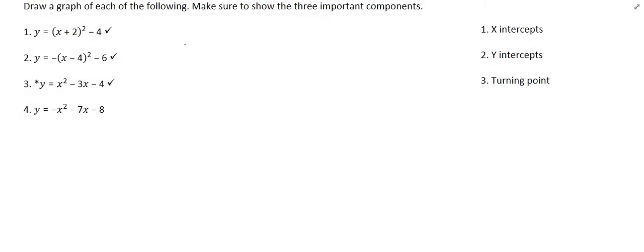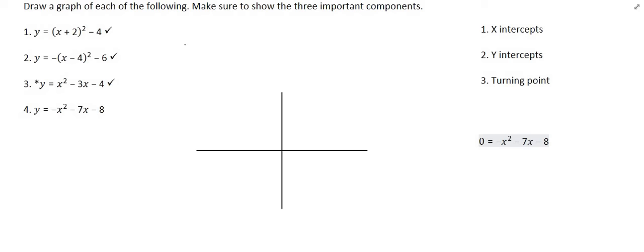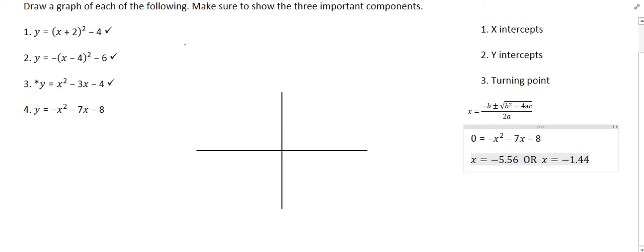By now you should be getting the process. For the last question, we start with the x-intercepts by making y equal to zero. Try to factorize; if that doesn't work use the quadratic formula. The quadratic formula gives two x answers of approximately negative 5.56 or negative 1.44. We can then place those two points on the diagram.